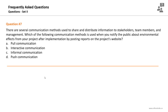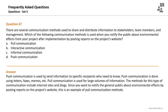There are several communication methods used to share and distribute information to stakeholders, team members, and management. Which communication method is used when you notify the public about environmental effects from your project after implementation by posting reports on the project's website? There are three types of communication methods: push, pull, and interactive. When posting reports on the project website for the public, this is an example of pull communication.